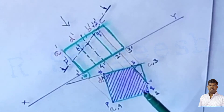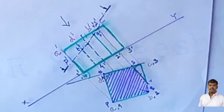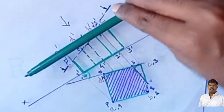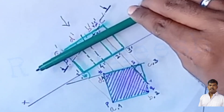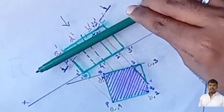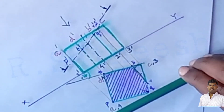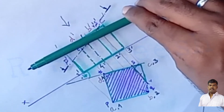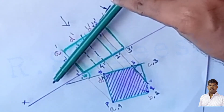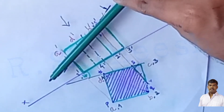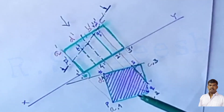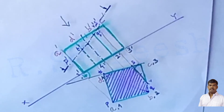The problem also asks for the true shape of the section. When the cutting plane is parallel to a principal plane, the true shape equals the section seen in that view. But when the cutting plane is inclined, the true shape differs and must be constructed separately.